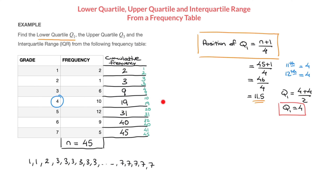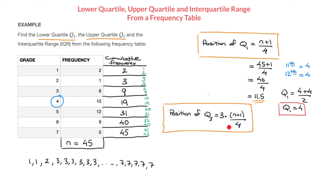Now it goes much faster to find the upper quartile Q3. Just as for Q1, there's a formula for the position of Q3: position of Q3 = 3(n + 1) / 4. The (n + 1) / 4 part is the same as before, which we already know equals 11.5. So we multiply by 3: 3 × 11.5 = 34.5. That is the upper quartile's position.